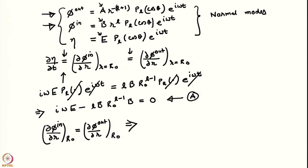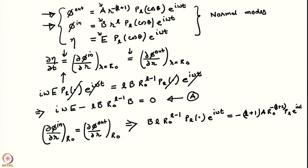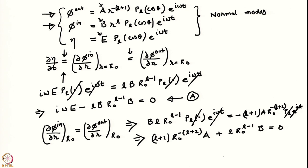If I do that, then for phi_in I get L times B_L R_0^(L-1) P_L e^(i omega t). This equals d(phi_out)/dR, which gives a minus sign: A R_0^(-(L+2)) P_L e^(i omega t). The P_L and the e^(i omega t) cancel because they are not zero at all times. So I can write: (L+1) R_0^(-(L+2)) A + L R_0^(L-1) B = 0. This is my second homogeneous equation in the unknowns A, B, and E. I will call this equation B.